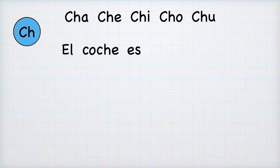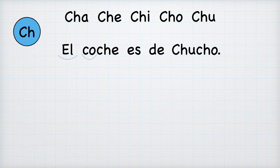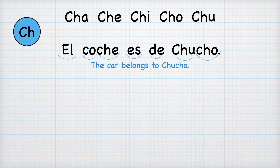Es is es, de, te and then we have a name: chu, cho — Chucho. So we have che-u: chu, and then che-o: cho. Chucho — and this is a nickname actually. El coche es de Chucho. El coche es de Chucho. The car belongs to Chucho.